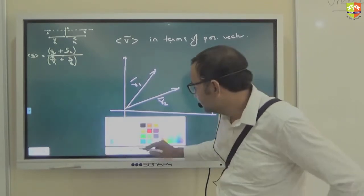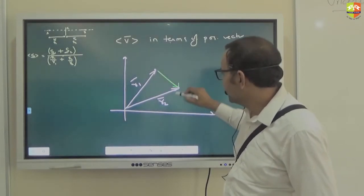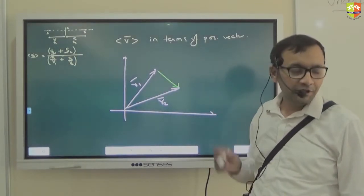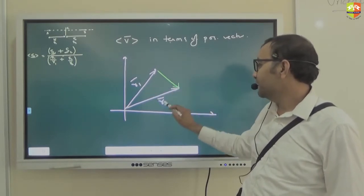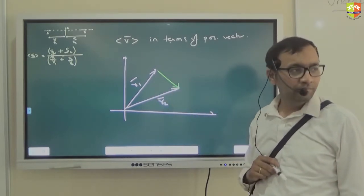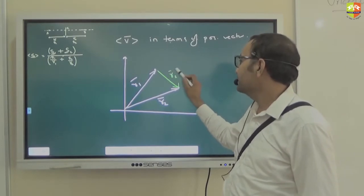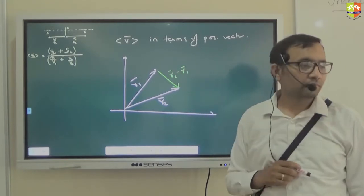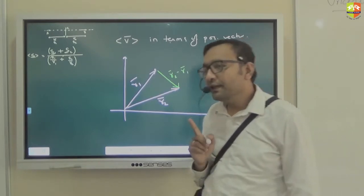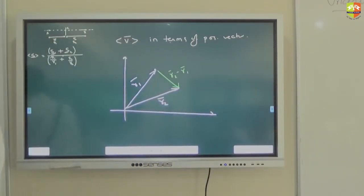This is the displacement. Is this the displacement? R1 plus this vector should equal R2 — by the triangle law. So this displacement vector will be R2 minus R1. Basically, we have learned that the change in the position vector is the displacement vector.